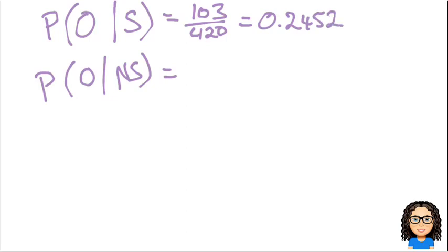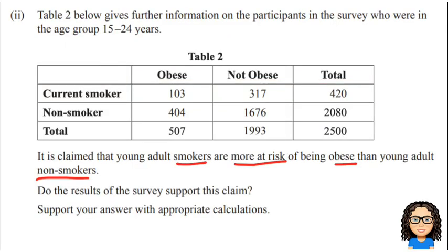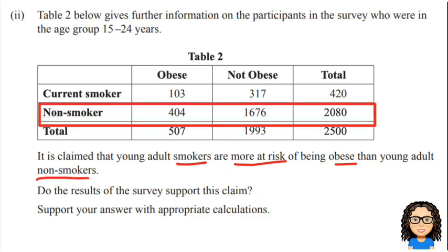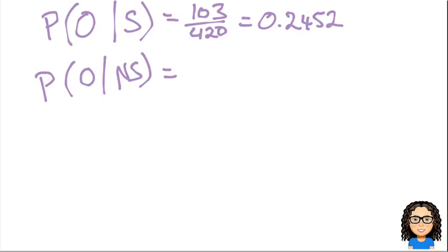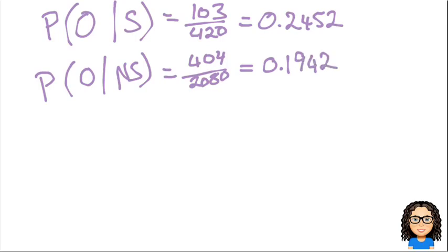Now let's find the next probability — the chance of being obese if I'm a non-smoker. There are 2,080 non-smokers, and there are 404 of those that are obese. So the chance of being obese given that you're a non-smoker is 404 out of 2,080. Converting that to a decimal gives 0.1242. If you've got either of those values, then that will get you a U.